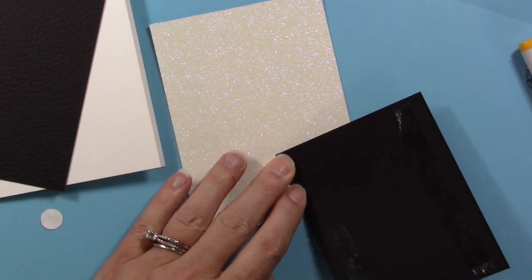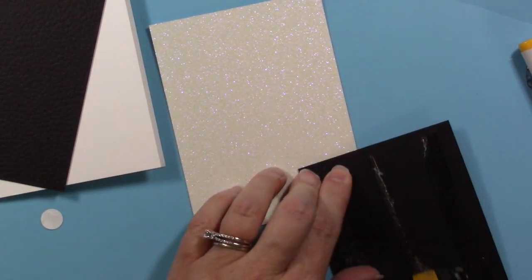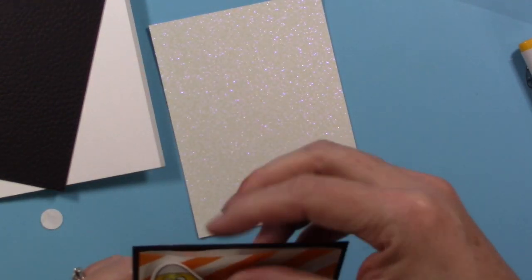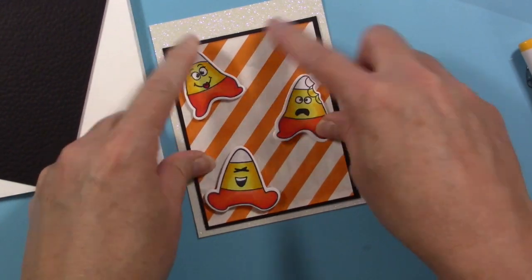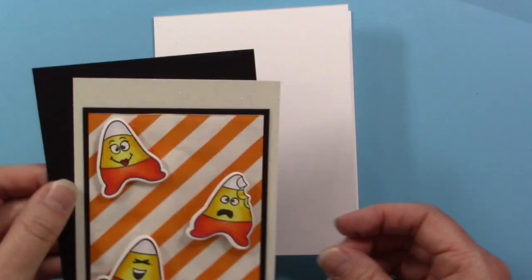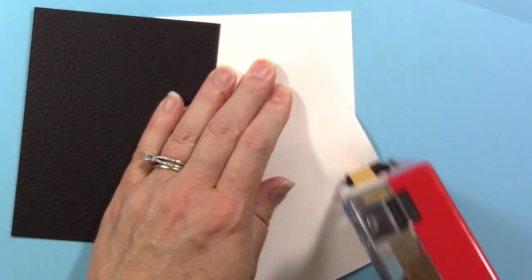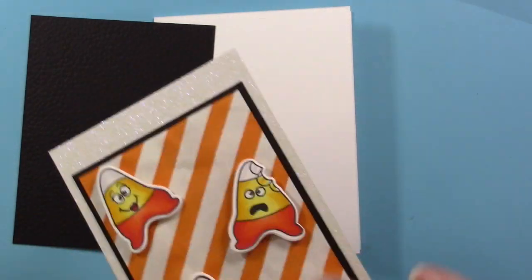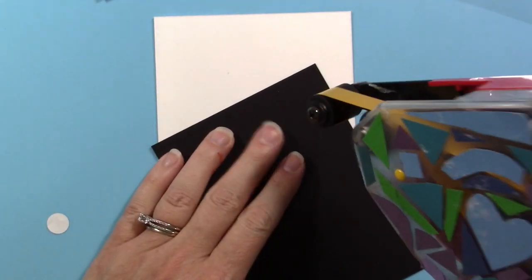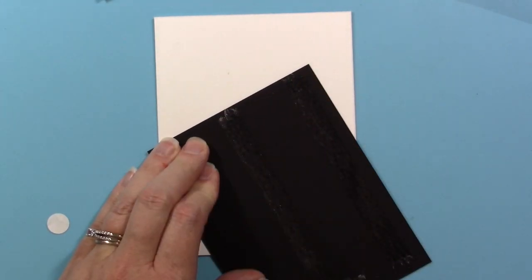I like to use a really sticky adhesive here. You can also use glue if you prefer, especially on top of the glitter paper, although I find that my ATG tape runner works really well. I'm going to adhere the black cardstock to the card base.